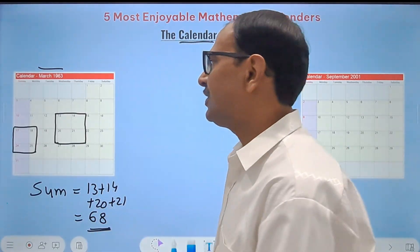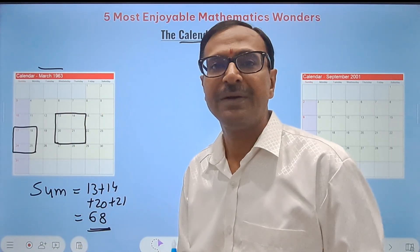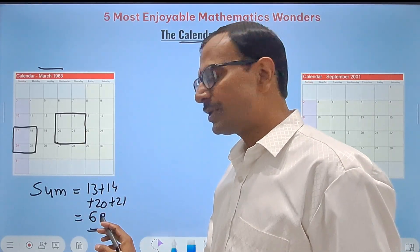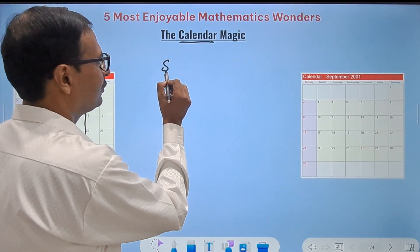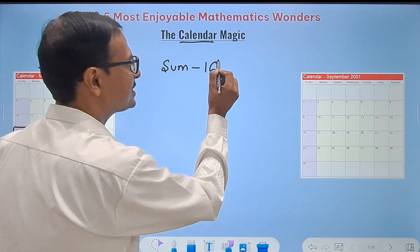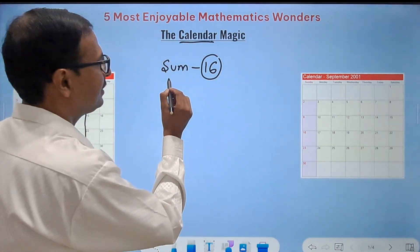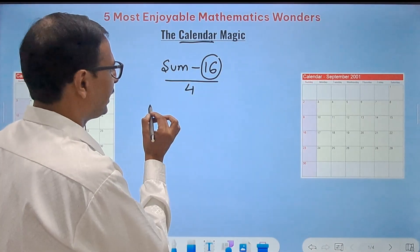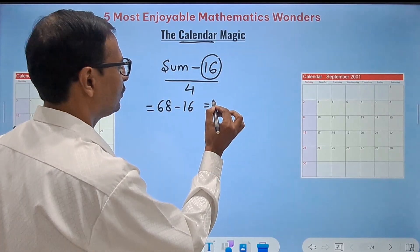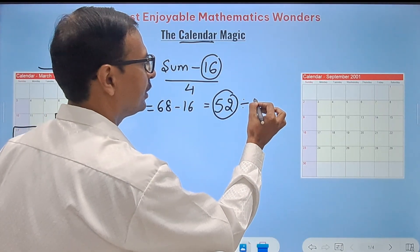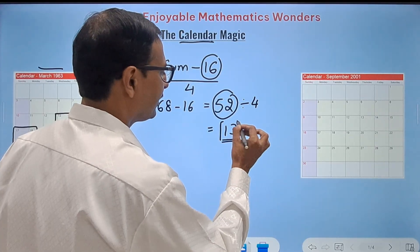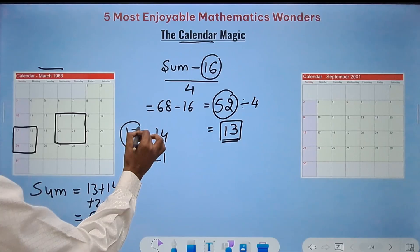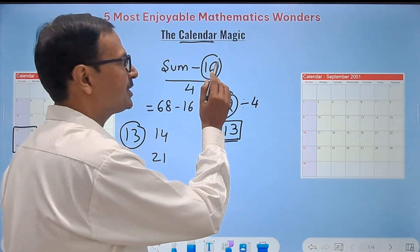Suppose they chose 13, 14, 20, and 21. They add these up and tell you the sum — in this case 68. You don't know which year or month the calendar belongs to, but using this sum you will tell them the four numbers they chose. From that sum, subtract 16 — a fixed number you must remember — and then divide the result by 4. So 68 minus 16 is 52, divided by 4 gives 13.